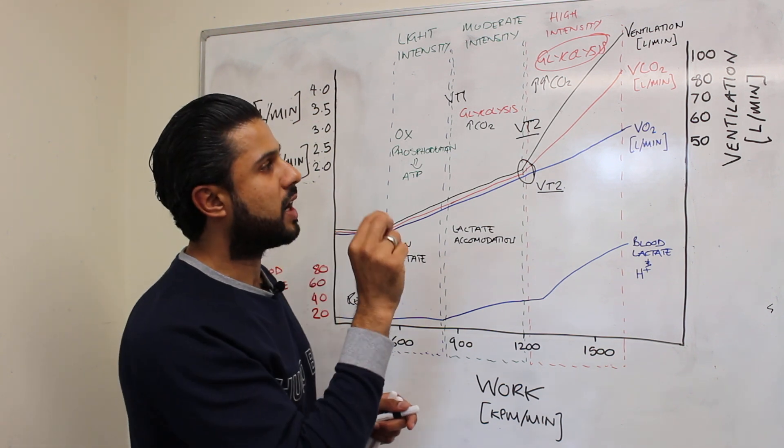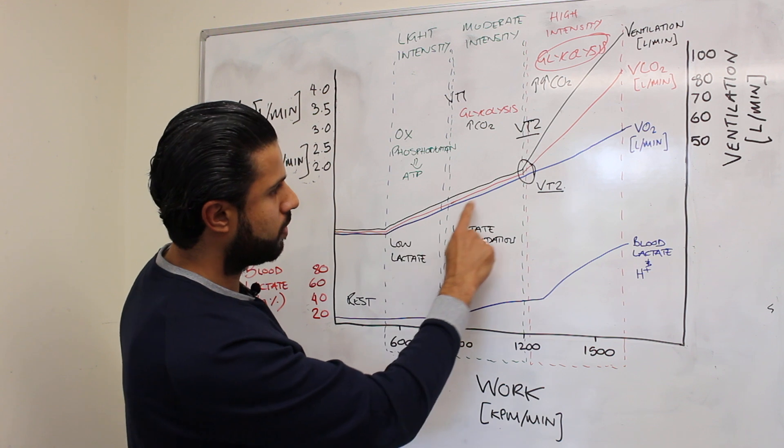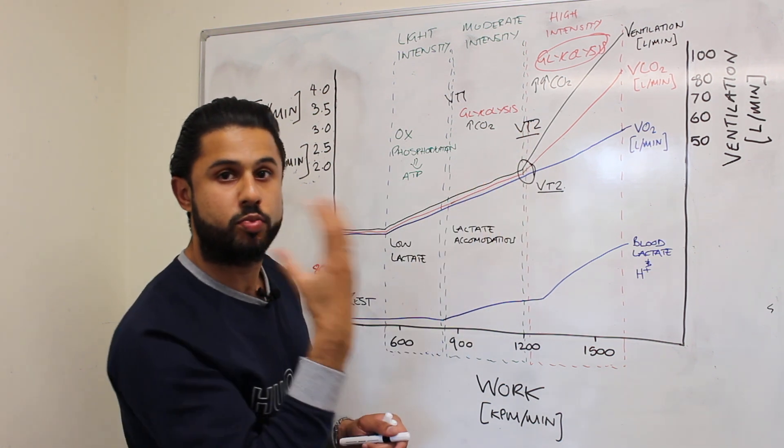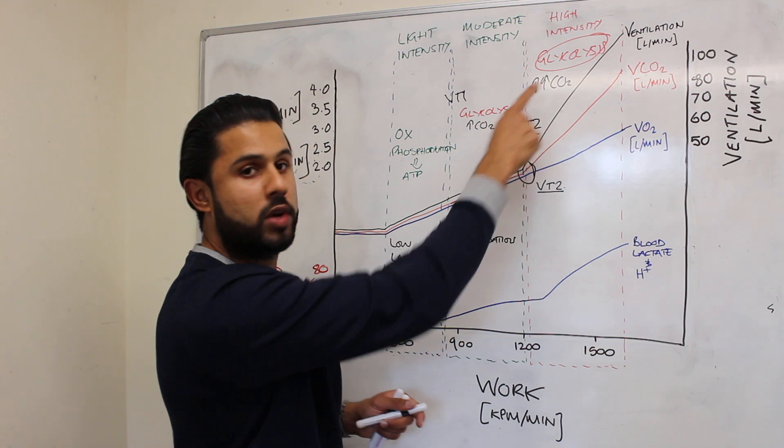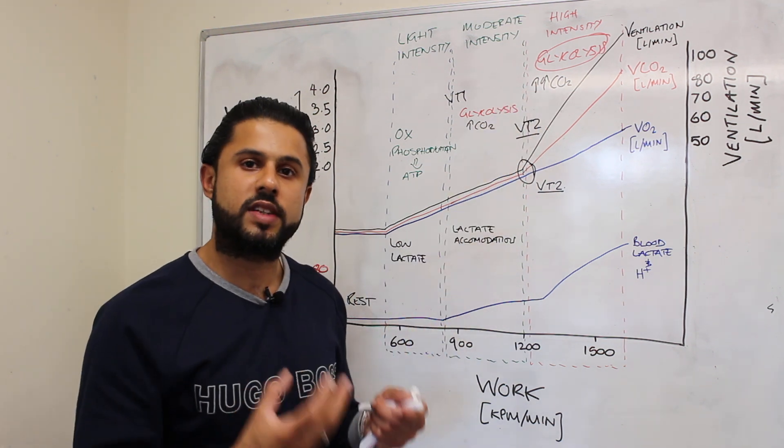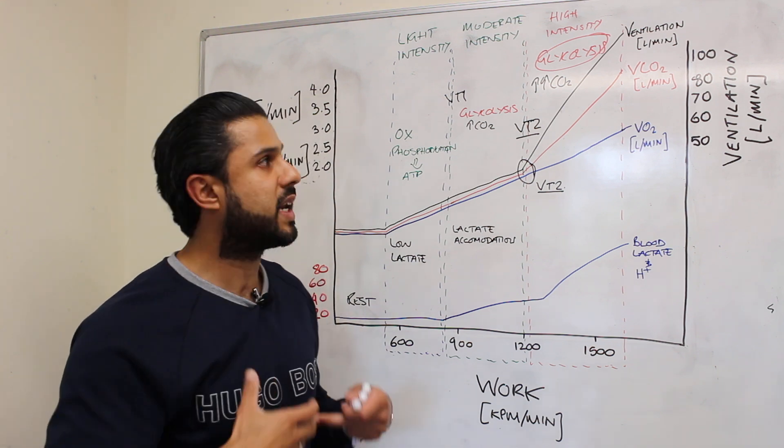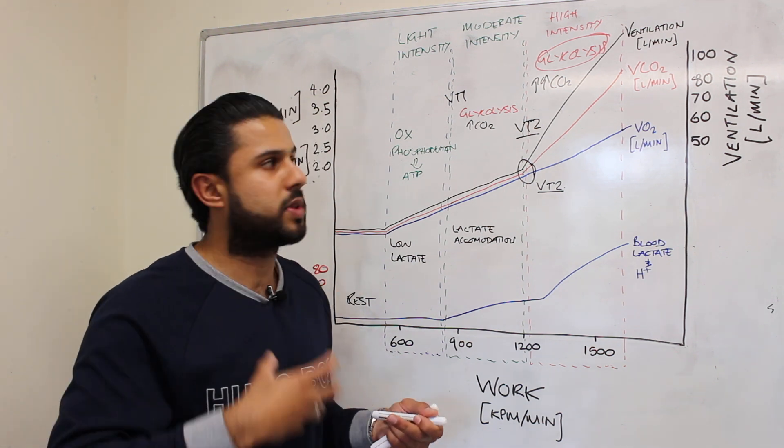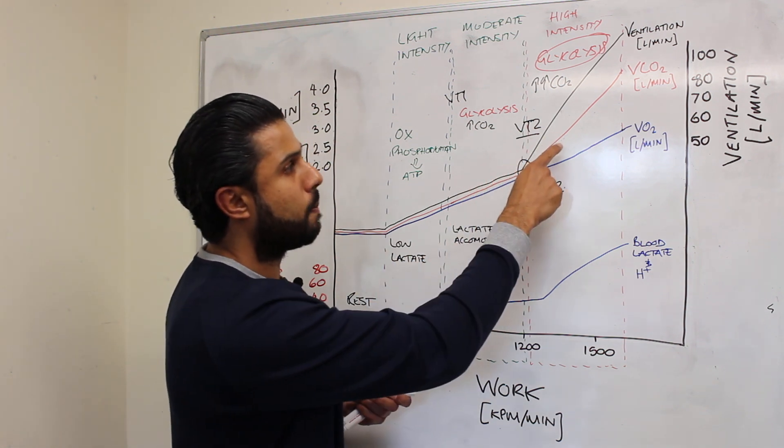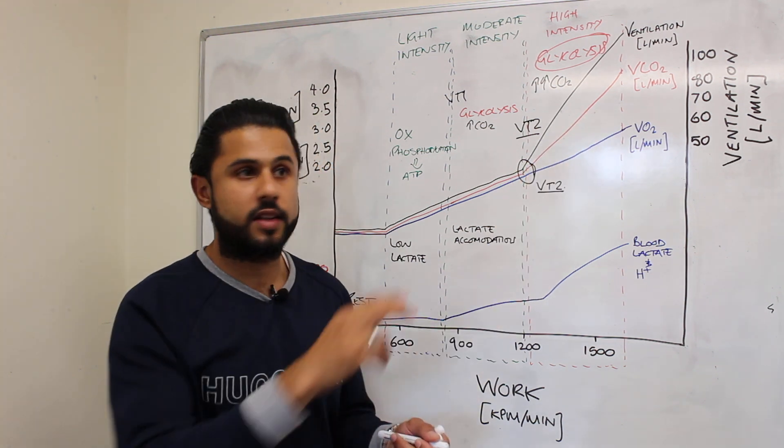So up to this point the ventilation was matching the required oxygen requirement and it was breathing off the CO2. Now we're relying upon glycolysis, we're producing much more CO2. The chemoreceptors have detected that, they've sent a signal to the respiratory centers in the brain and we now start to breathe much harder. Our ventilation increases and the reason for that is we're trying to blow off that CO2.